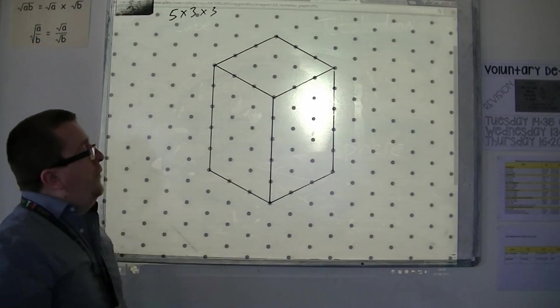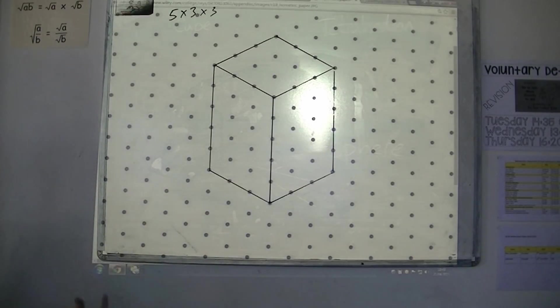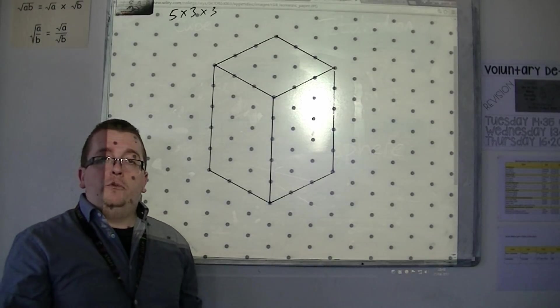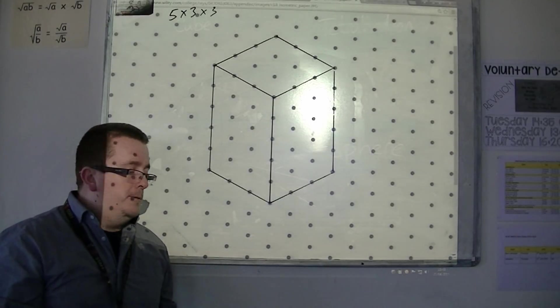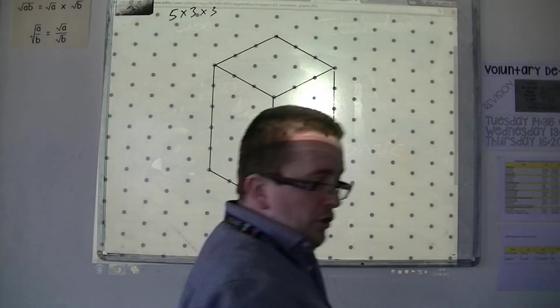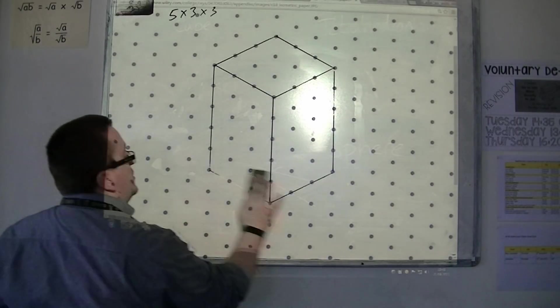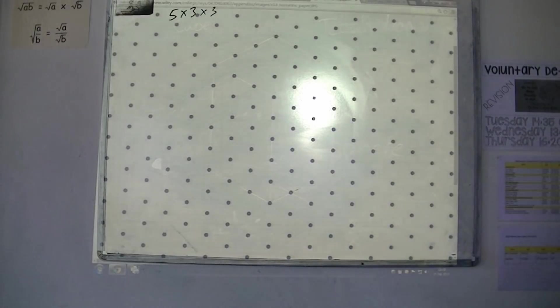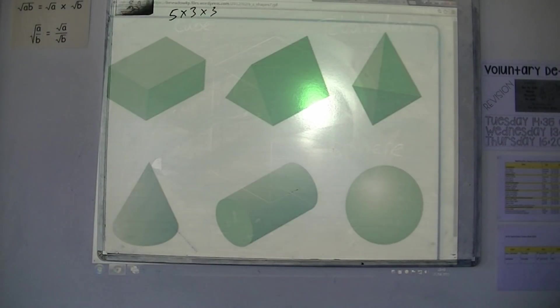So, that's how you would draw using isometric paper. And you can draw some quite fancy items doing it. If I just rub that one out, and we just put a Google search on. So then, you look at other shapes that have been made.